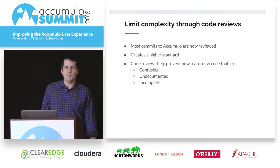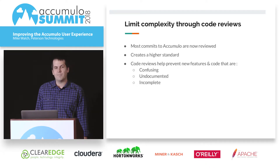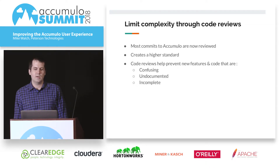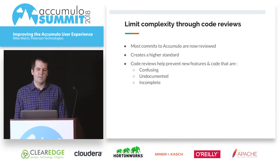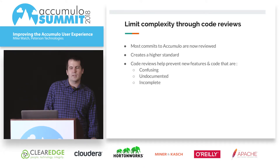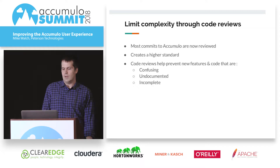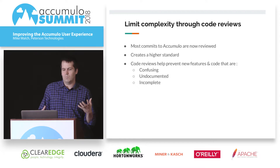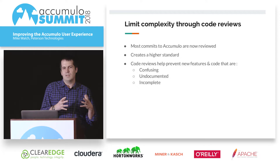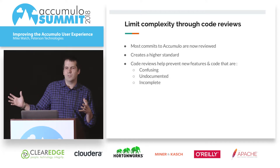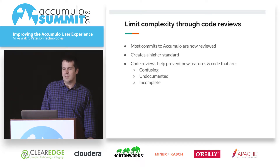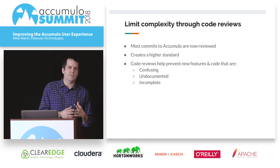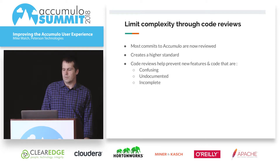Another way we can limit complexity is through code reviews. We've been doing that for a while. We're not officially review-then-commit, but a lot of stuff is reviewed before it's committed, and I think that's creating a higher standard. Things aren't getting into Accumulo that are undocumented or half complete. Stuff that gets added needs to be supported for potentially years, so it should go in in a good state. If things get in and they're not complete, it creates a burden for developers down the road.